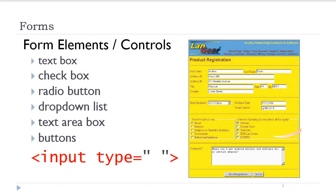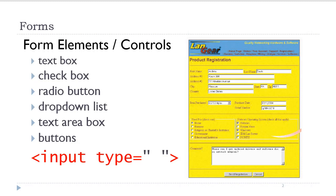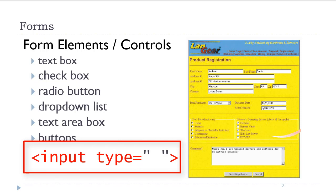HTML forms contain a variety of form elements, sometimes referred to as controls. We commonly see text box, check box, radio buttons, drop-down list, a text area box, and buttons. Most form elements are created using the input tag and varying the value of the type attribute.